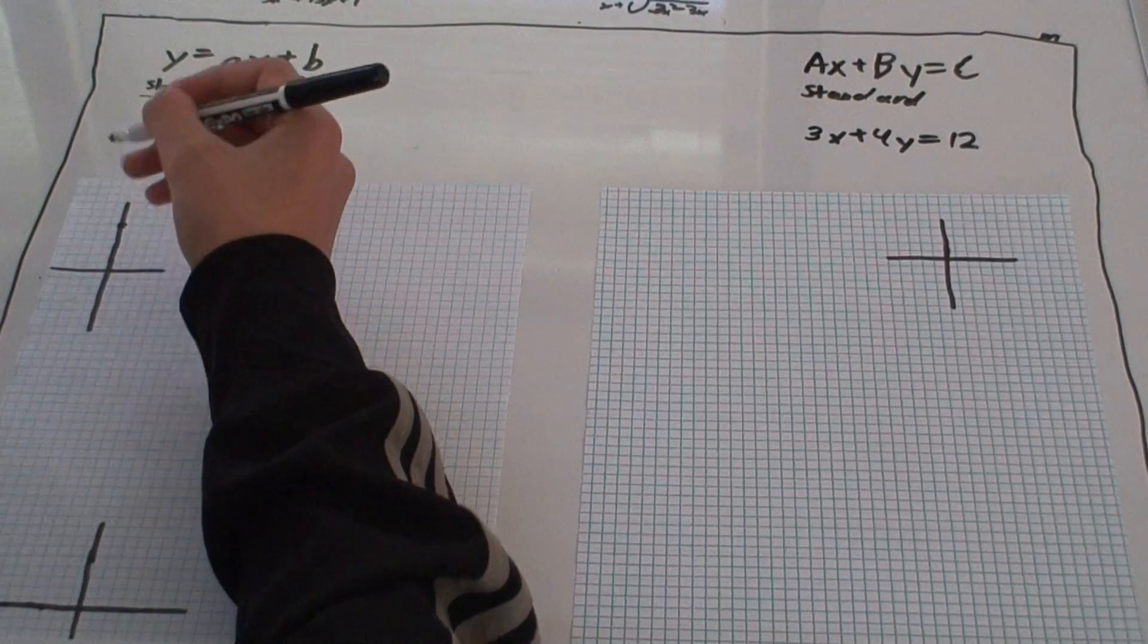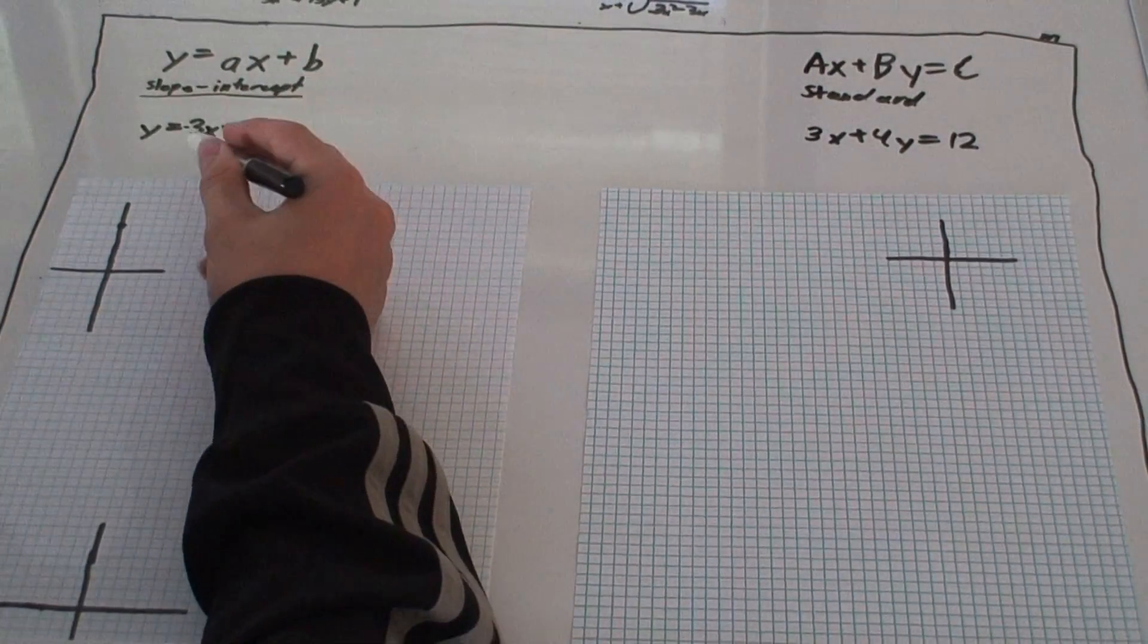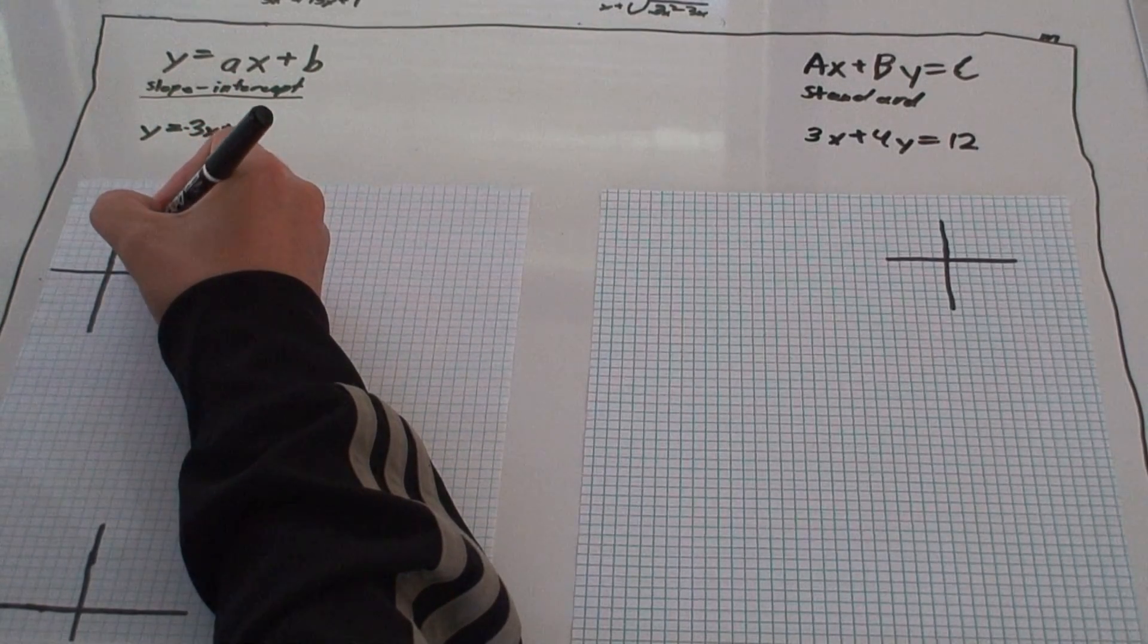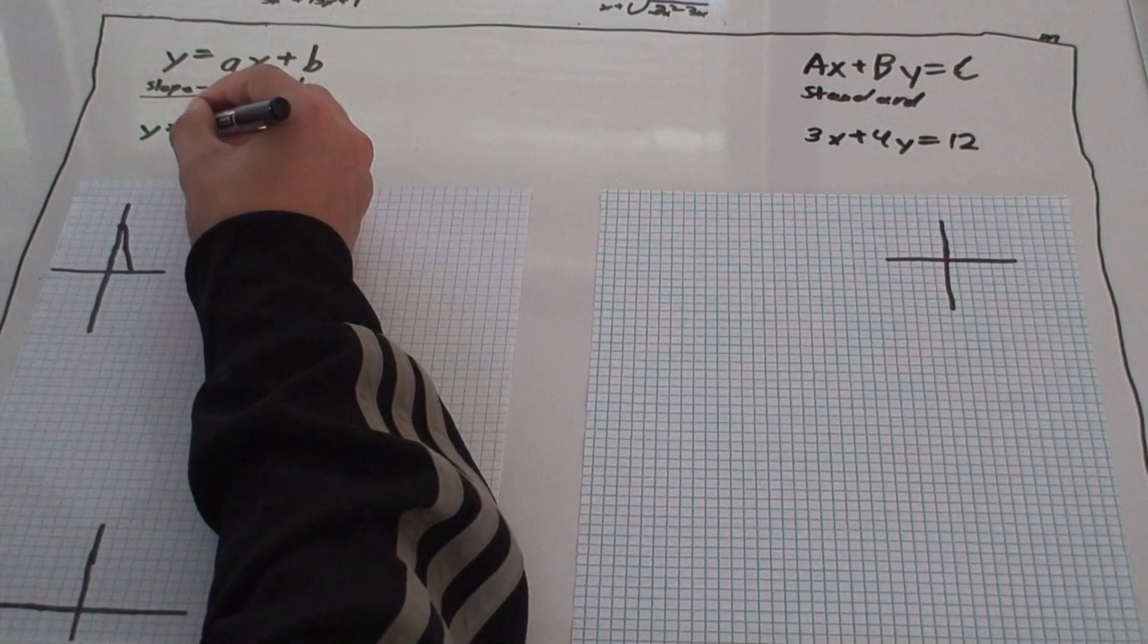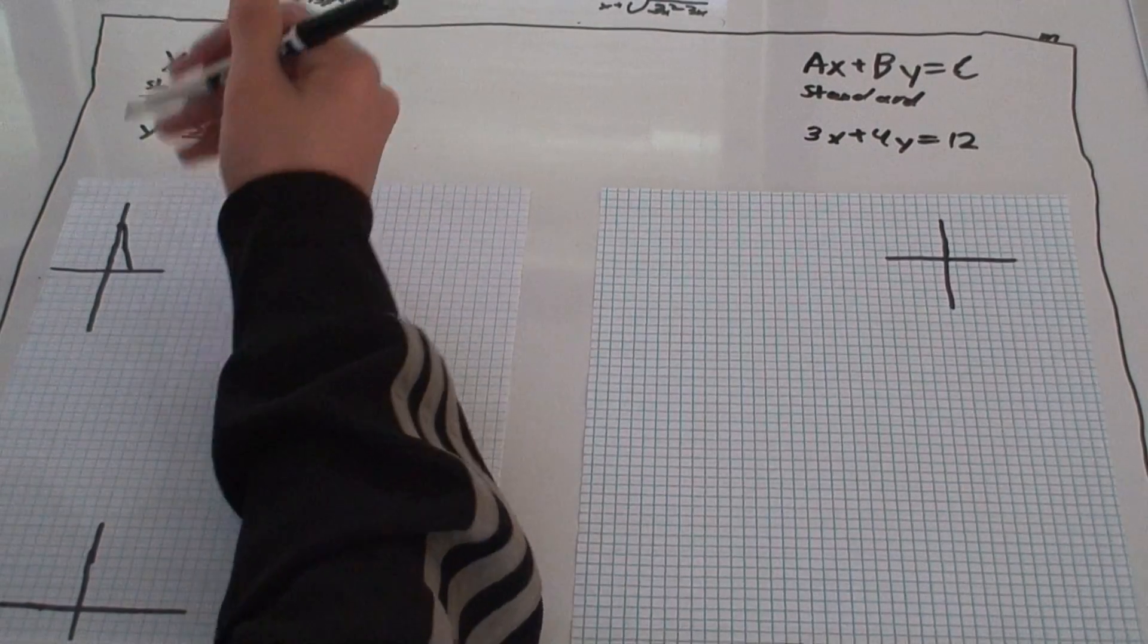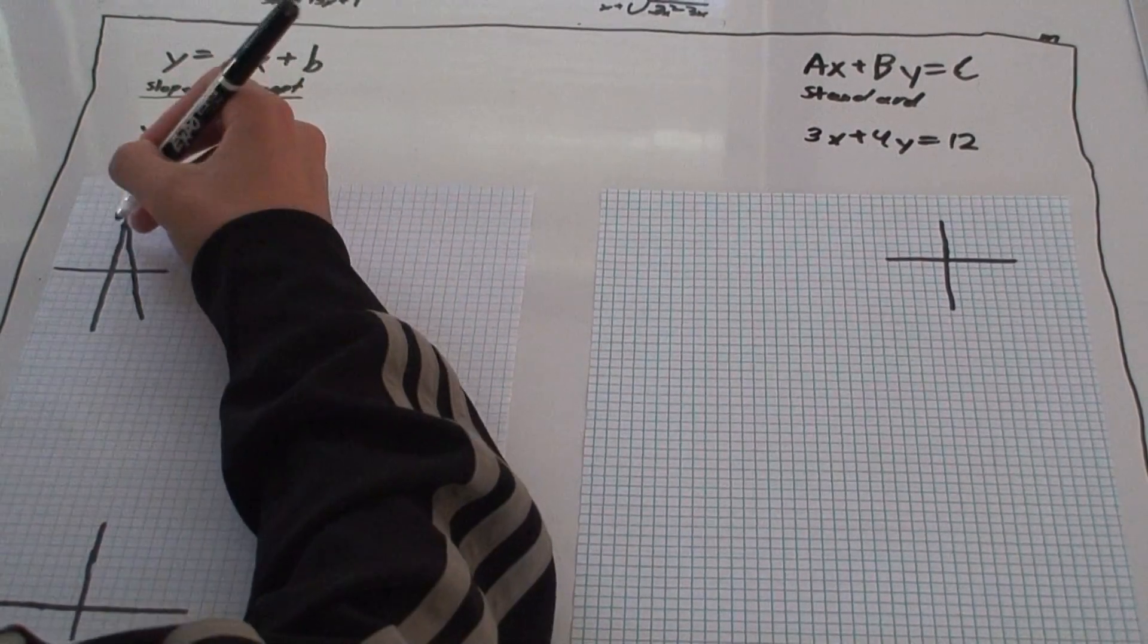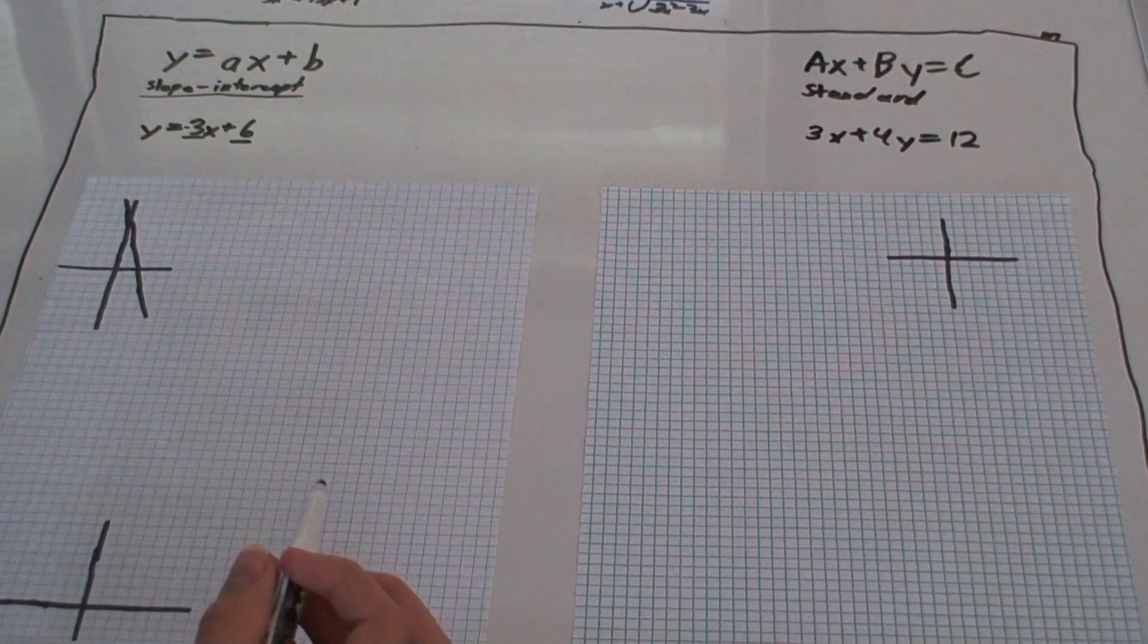We can find our slope, which is negative 3, just by this. However, this is the modifier for x, so negative 3, that is our slope. It just goes down 3, you can go up 3 over here. So, that's slope-intercept form.